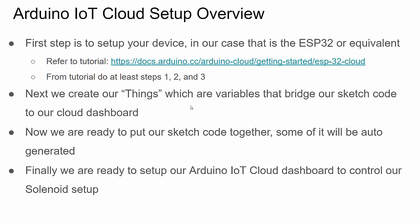I'm going to start with creating our thing, assuming you've already looked at that tutorial, you have a login, your network information entered, and your ESP32 or equivalent Wi-Fi Arduino board set up in IoT cloud. We'll look at how to set up our things, then our code, and then setting up the dashboard and seeing everything in action.